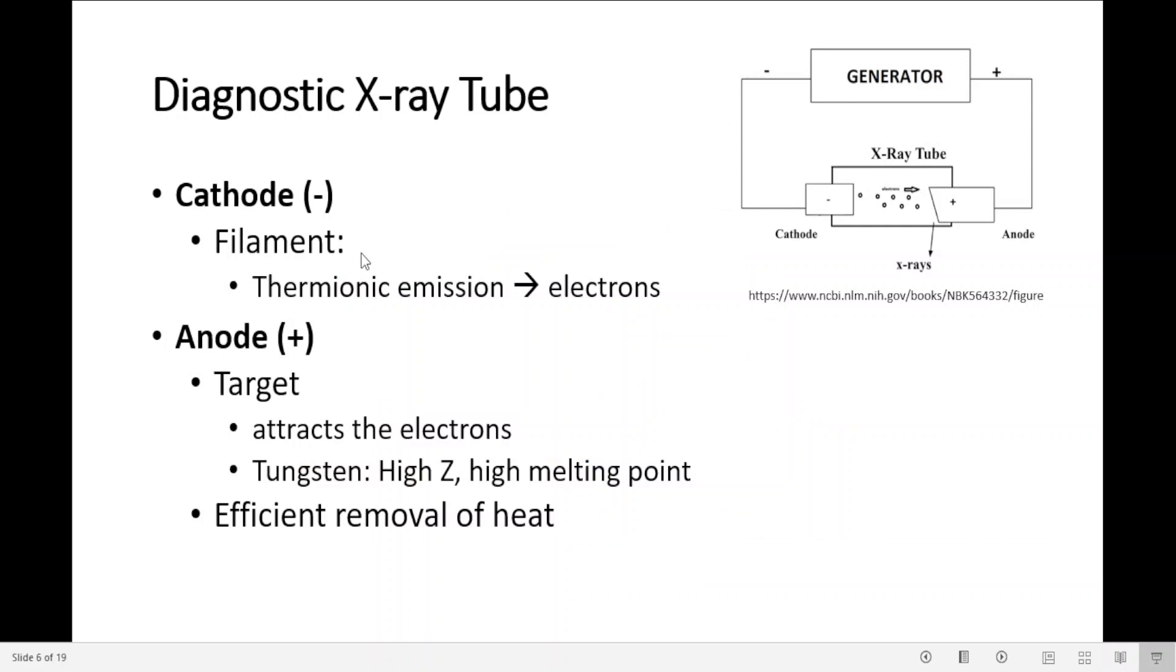So we have a cathode, which is negative. It has the filament where electrons are emitted through thermionic emission. The anode is positive, has the target, attracts the electrons. It's made of tungsten, usually because it has a high atomic number, high melting point. Efficient removal of heat from the targets is an important requirement for the anode design.